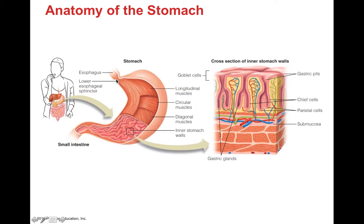The lower esophageal sphincter connects the esophagus and stomach, and the pyloric sphincter allows entry into the small intestines. The stomach has three layers of muscle: longitudinal, circular, and diagonal. Most of the rest of the GI tract only has two layers, but the additional diagonal muscle in the stomach allows for the churning motion that mixes all the food together.